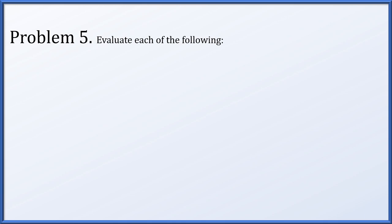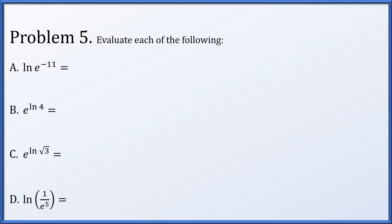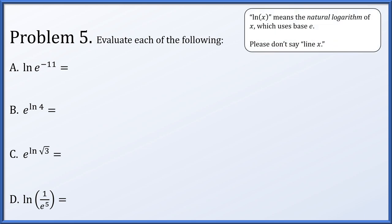In problem five, we'll be evaluating four different expressions: the natural log of e to the minus 11, e to the natural log of 4, e to the natural log of root 3, and the natural log of 1 over e to the fifth. Remember, natural log of x means the logarithm base e. Please do not say 'line x.' If one fewer student says 'line x' in place of natural log, then this whole series of videos will have been worth it.